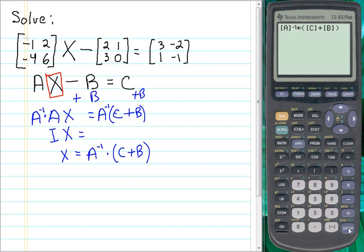Close that parenthesis and press enter. So our solution as we can see on the calculator screen for matrix X is a matrix with 11, negative 2, 8, and negative 1.5.